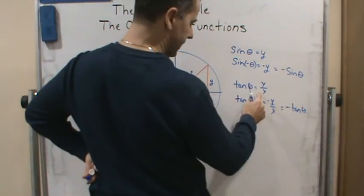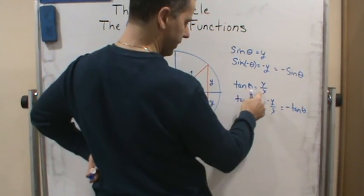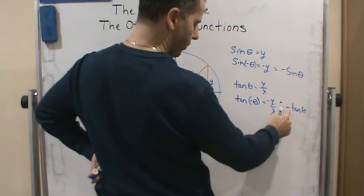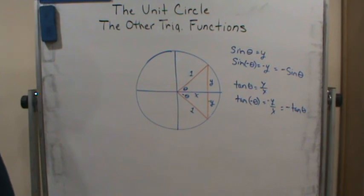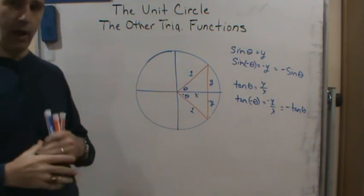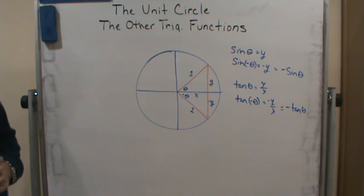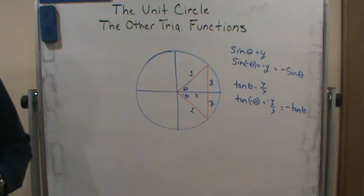Right? Because then I get negative of tangent theta. Tangent theta is equal to y over x. So again, I just showed that tangent is an odd function, and so we can do the same thing with all of the other four trigonometric functions, and then we can know which ones are odd and which ones are even.